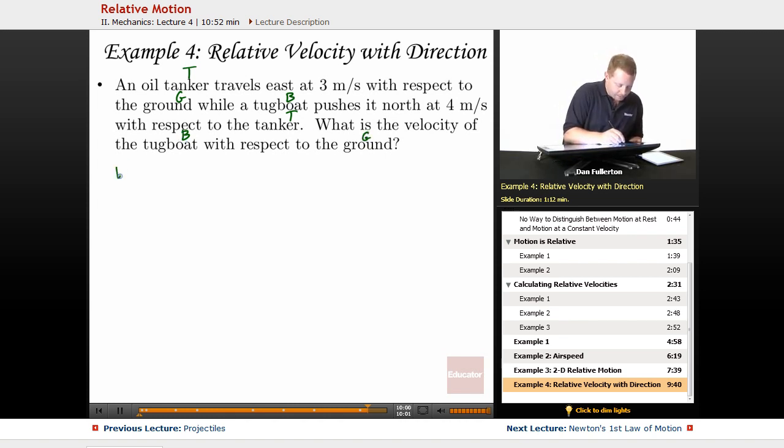So we want velocity of the tugboat with respect to the ground. That must be the velocity of the tugboat with respect to the tanker plus the velocity of the tanker with respect to the ground.